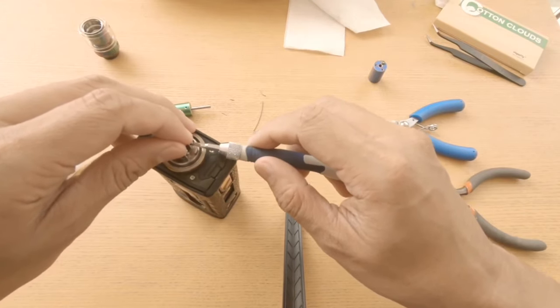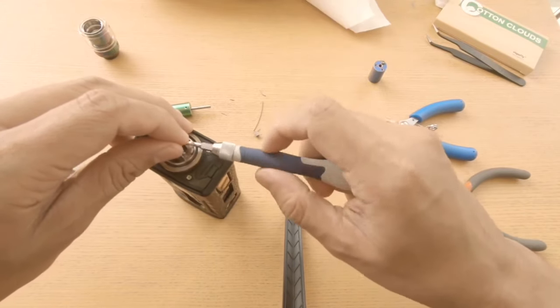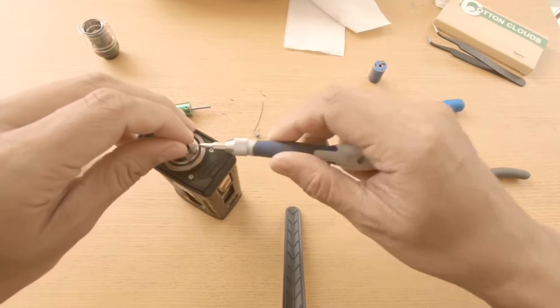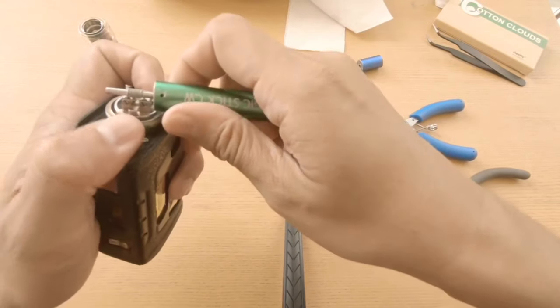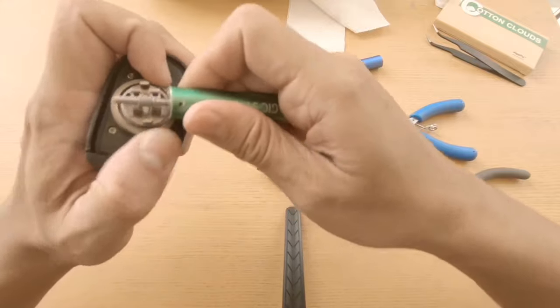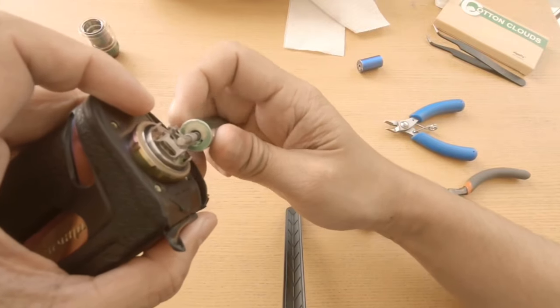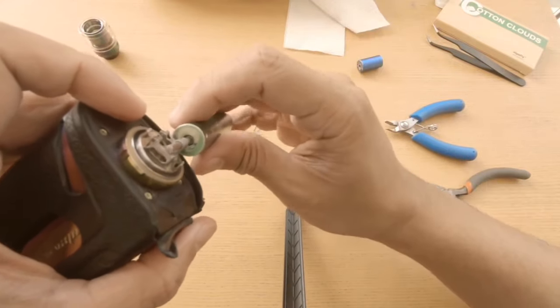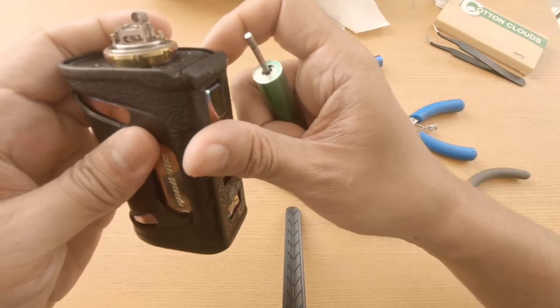Make sure there's spacing between the coil and the deck. Don't let it touch because it might short. Raise the coil upward to create spacing between the deck and coil.